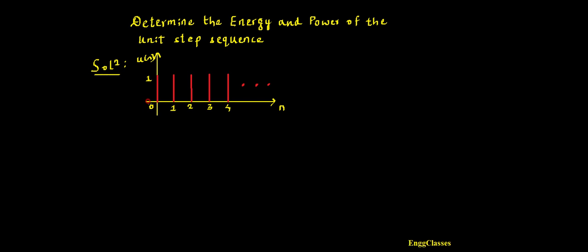For such a signal we need to find energy as well as the power. To find the energy of any discrete time signal we have the straight formula. Energy E is equal to summation n varying from minus infinity to infinity of x squared of n.